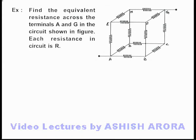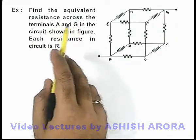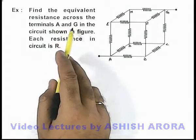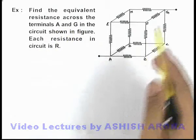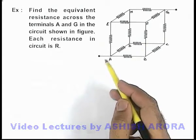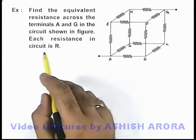In this example, we are required to find the equivalent resistance across the terminals A and G in the circuit shown in figure. Here also, each resistance in the circuit is R.